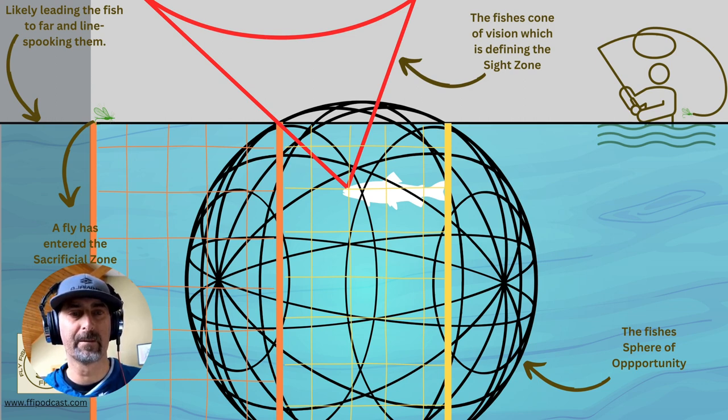Depending on the water level, they may move within that sphere of opportunity. Next is when I'm casting—how do I cast to ensure that I come into the vision cycle of the fish and optimize that?